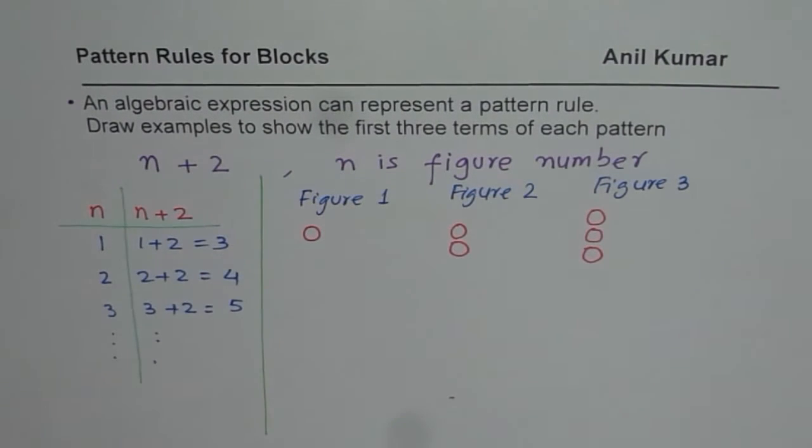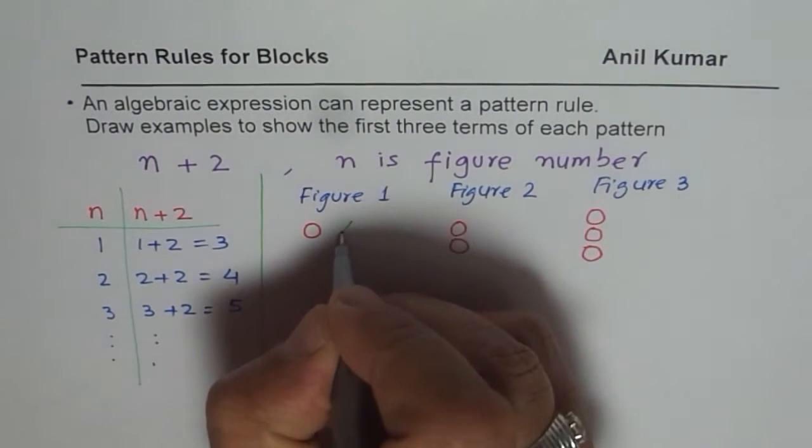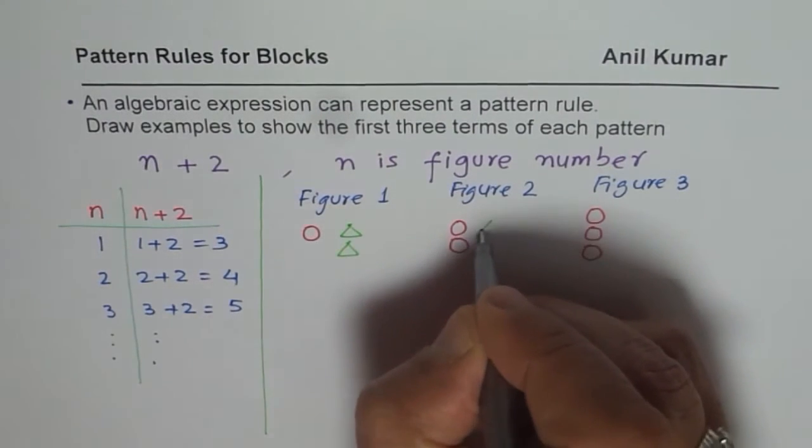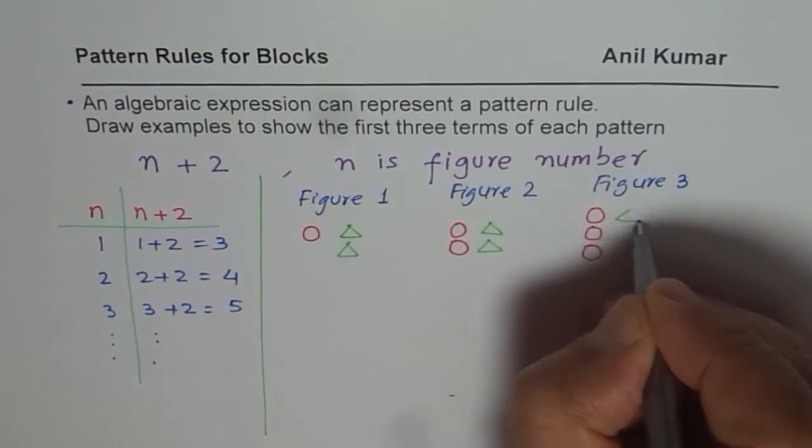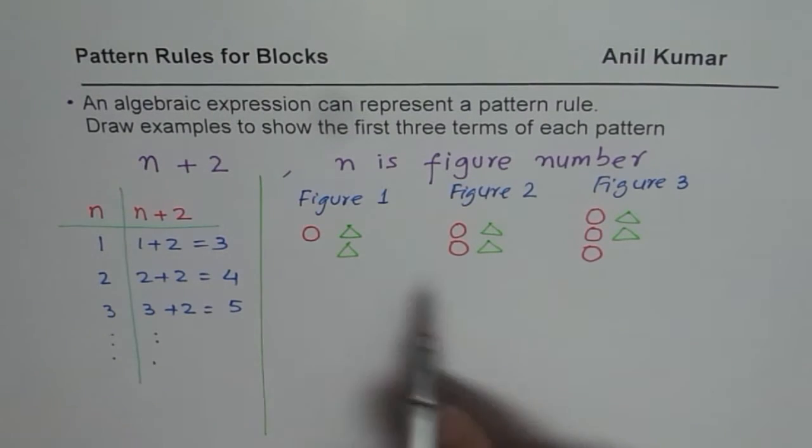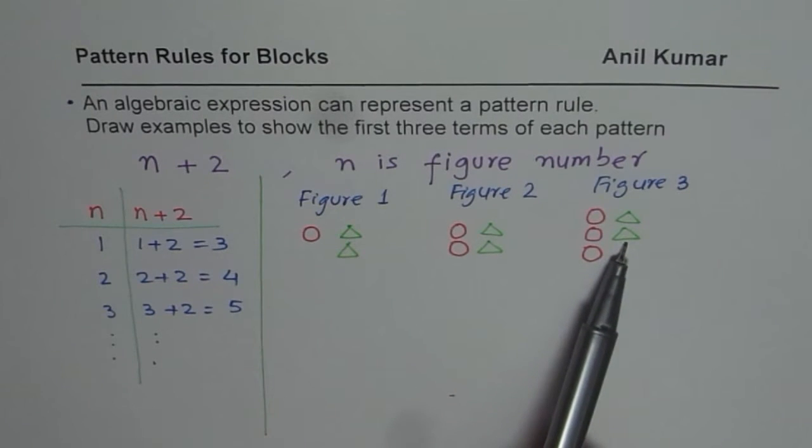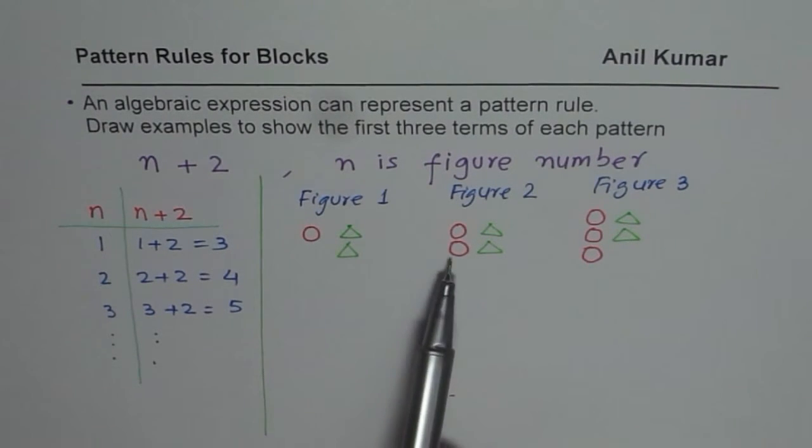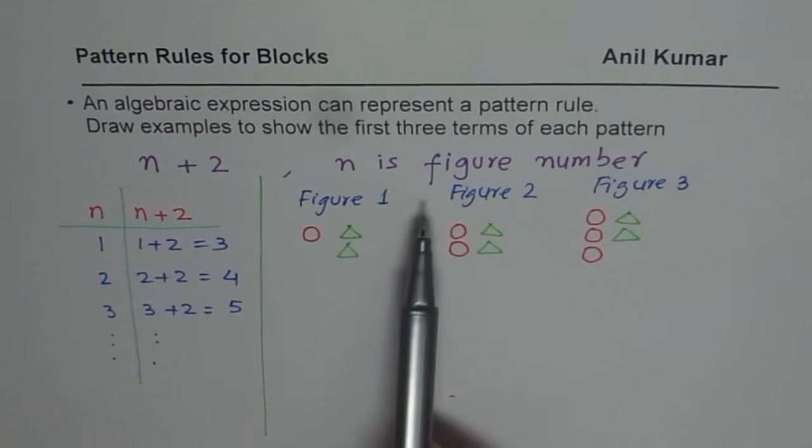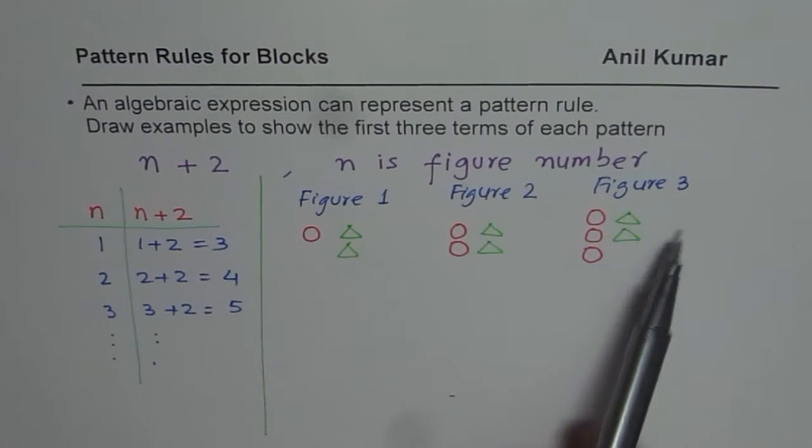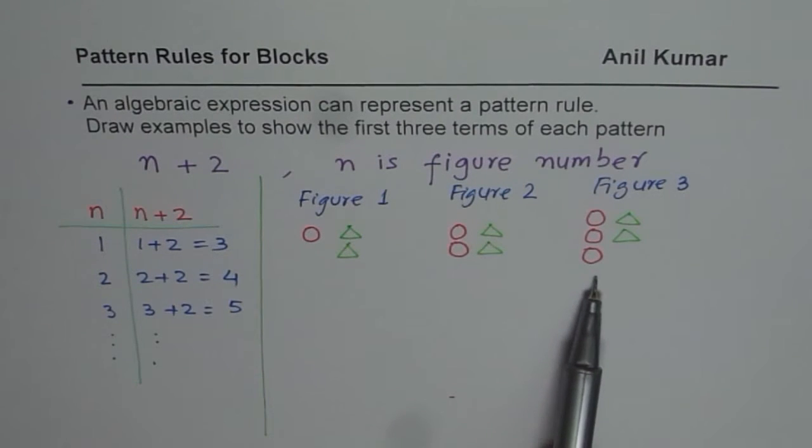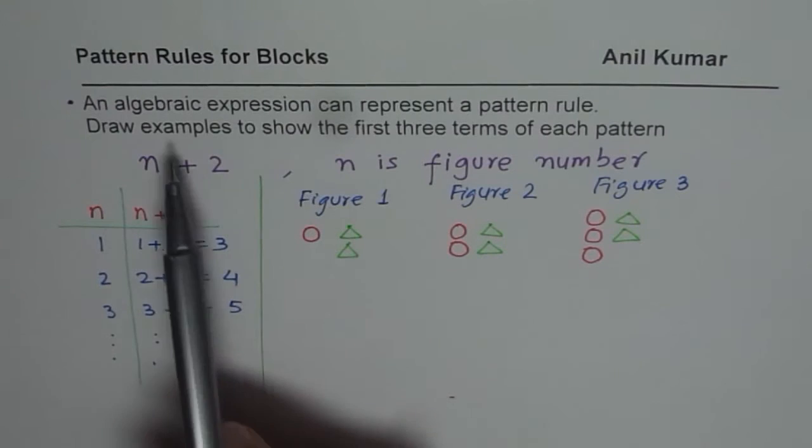And 2 is fixed for each figure. So fixed, let me have 2 triangles. So I could have 2 triangles in each figure. So 2 triangles. Do you see that? 2 triangles in each figure. So I have a pattern. In this particular pattern, 2 triangles are fixed. And we have 1 number, number of circles which increase by 1 each time. And therefore, in every figure, we have 1 more block each time as we increase the figure number.